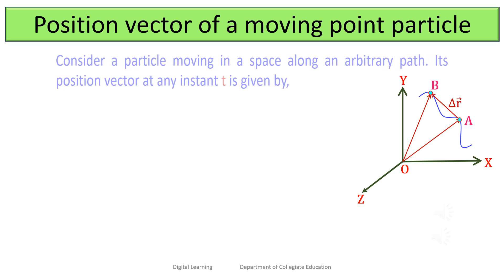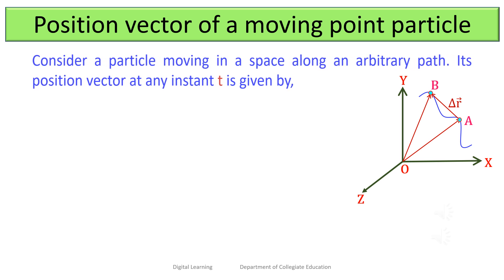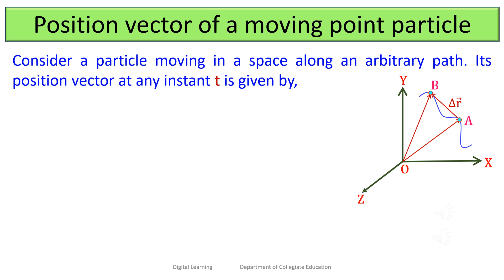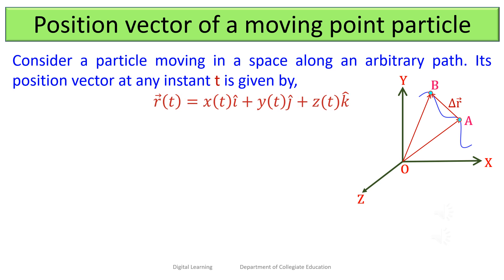Consider a particle moving in space along an arbitrary path. Its position vector at any instant t is given by vector r(t) = x(t) î + y(t) ĵ + z(t) k̂.